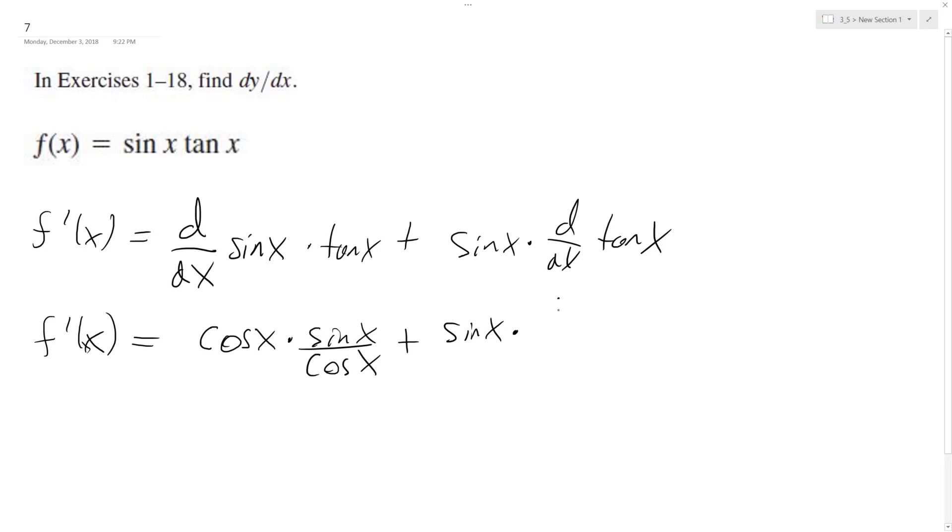So secant of x is one over cosine squared x. Okay, so simplifying this further, what I get is finally the cosines cancel, so I'm left with sine of x.